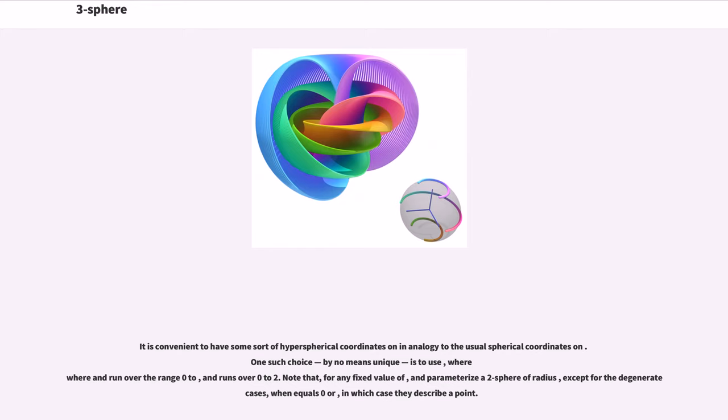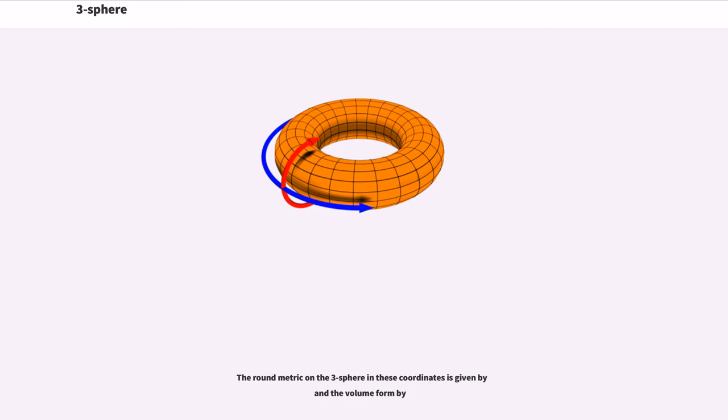where and run over the range zero to pi, and runs over zero to two pi. Note that, for any fixed value of, and parameterize a two-sphere of radius, except for the degenerate cases, when equals zero or pi, in which case they describe a point.